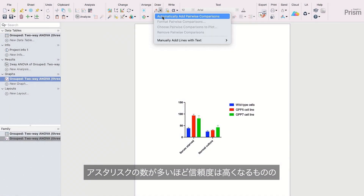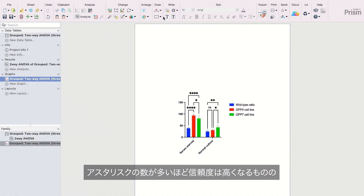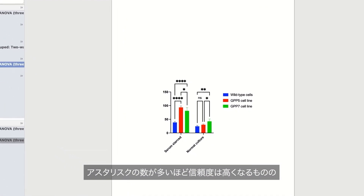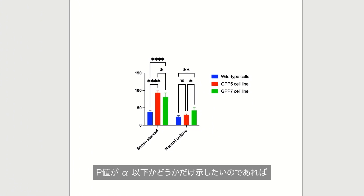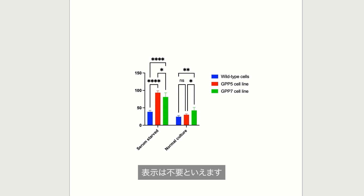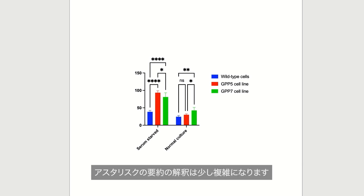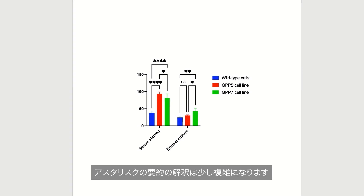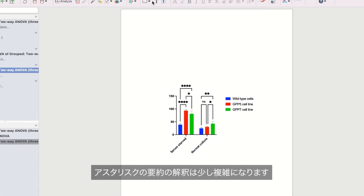While it can be useful to show more than one asterisk to indicate a stronger level of significance, it's sometimes unnecessary and can overly complicate the graphical display if the only thing you want to convey is whether or not the p-value is below alpha. Moreover, the interpretation of the classic asterisk summaries becomes a bit more complicated when alpha isn't set to its common value of .05.